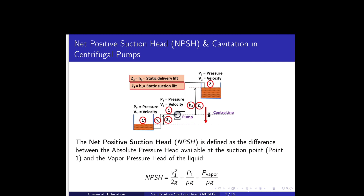Now I am going to define NPSH — net positive suction head. It is defined as the difference between the absolute pressure head available at the suction point (point 0.1) and the vapor pressure head of the liquid. So NPSH equals the kinetic head plus pressure head at the suction point minus vapor pressure head: NPSH = V1²/2g + P1/ρg − Pvapor/ρg.